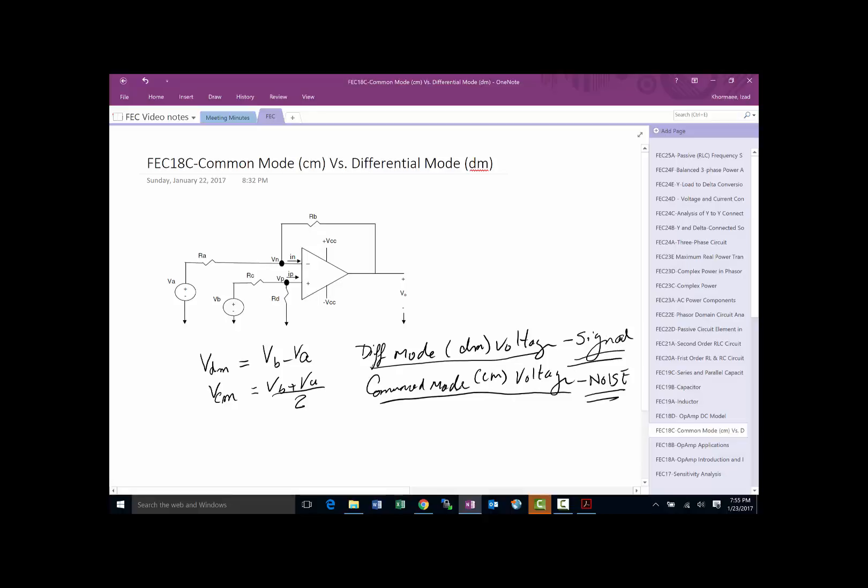Noise is a derogatory term in electrical engineering referring to voltages we don't like, while signal refers to what we like. Our goal is to minimize the effect of common mode because that's what we don't want, and maximize the effect of differential mode which carries useful signal.